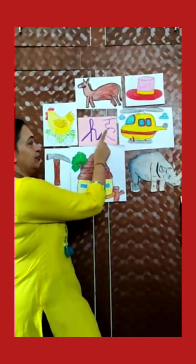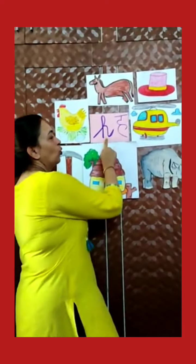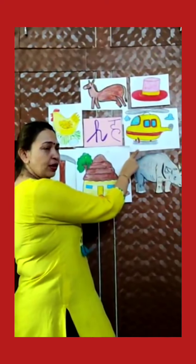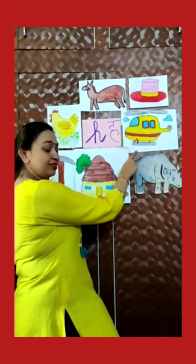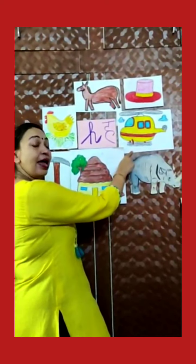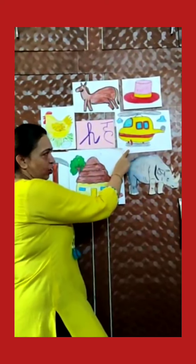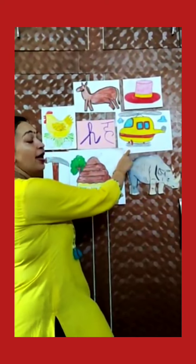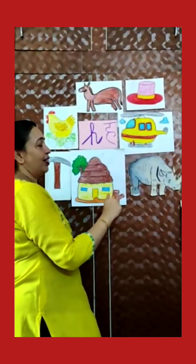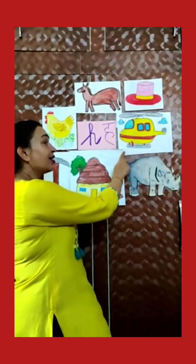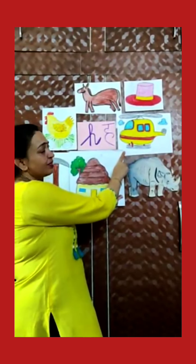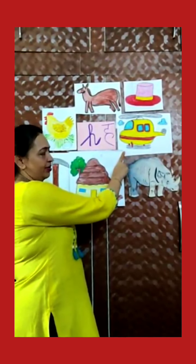H says H. Okay, what is this? This is an aeroplane? No, it's not an aeroplane. This is a helicopter. H for helicopter. Helicopter also flies in the sky, like an aeroplane. He bhi aeroplane ki tara sky mein fly karta hai.